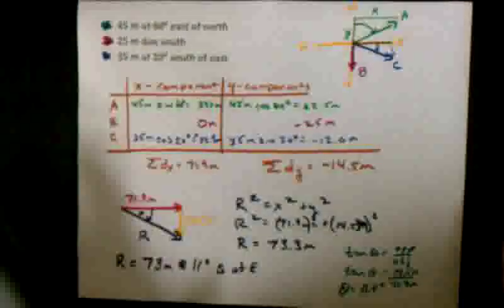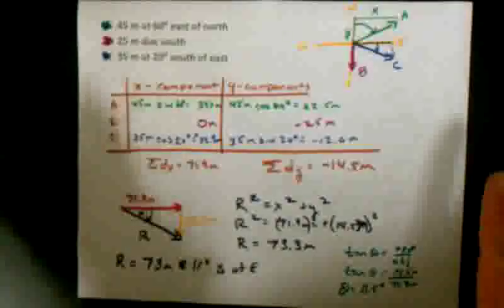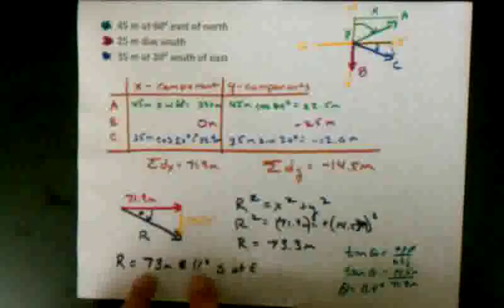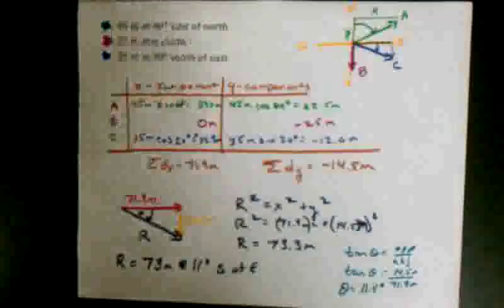Now if you compare this to the graphical method, this is going to be our exact answer. It might be a little more complicated, might take a little bit longer. So this is the exact answer to two significant figures. If I look back at the problem we did in the last lesson, you can see I got 75 meters at 11 degrees south of east. Not exact, but we're pretty close.